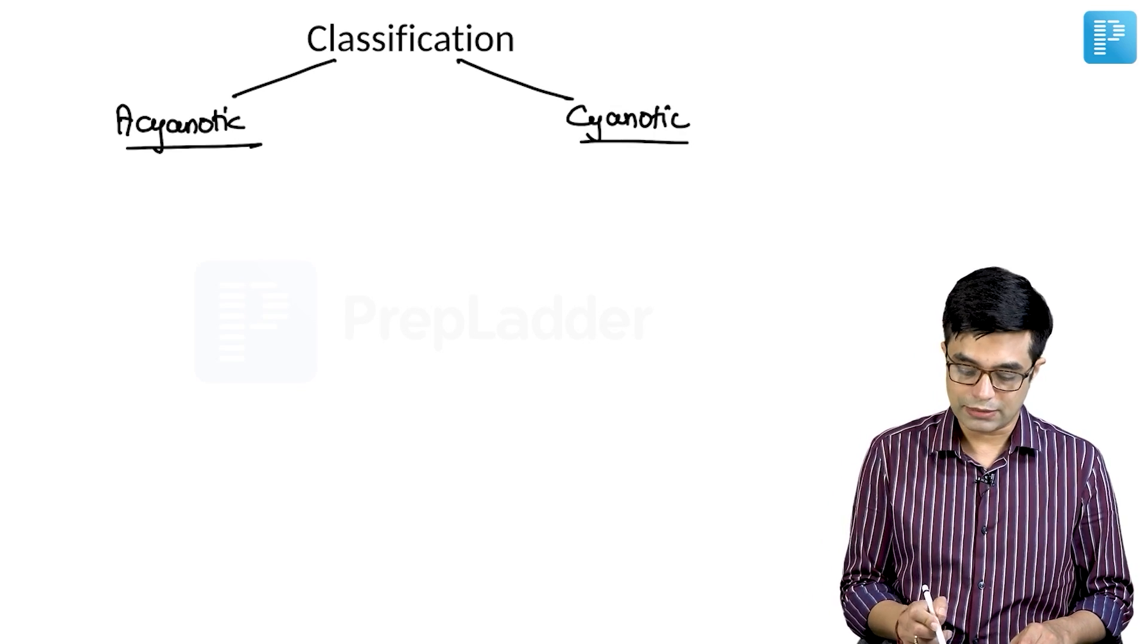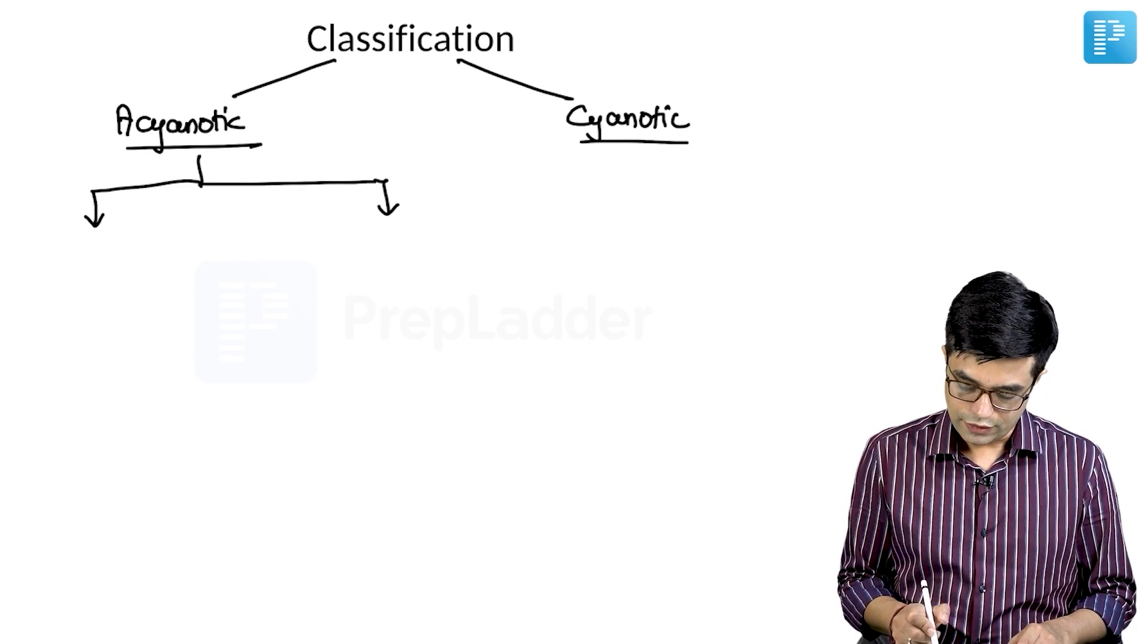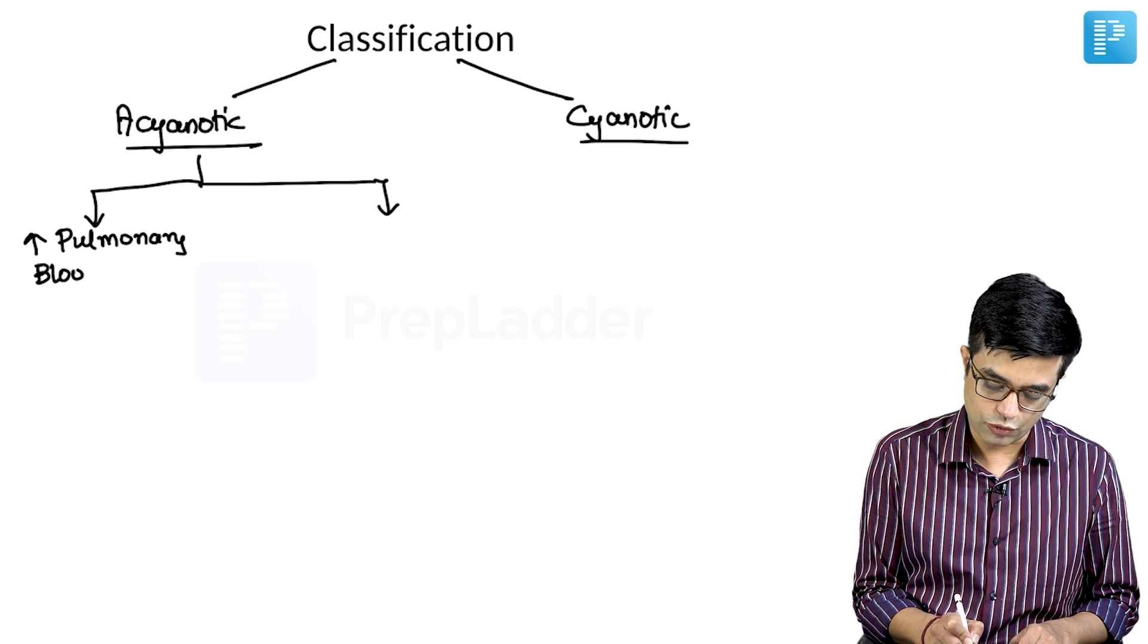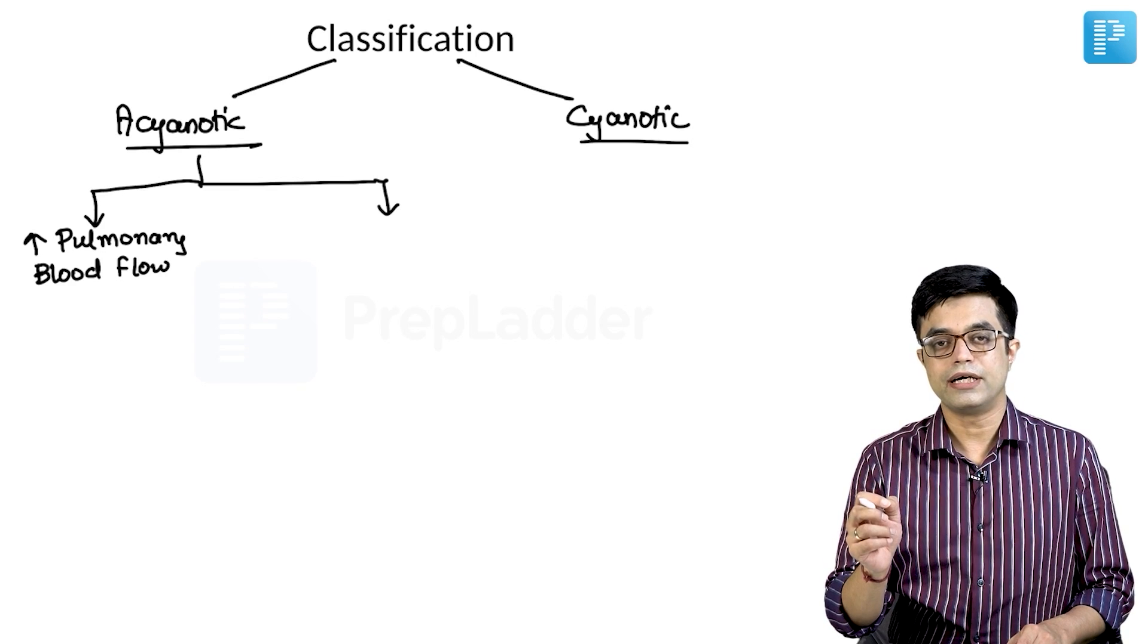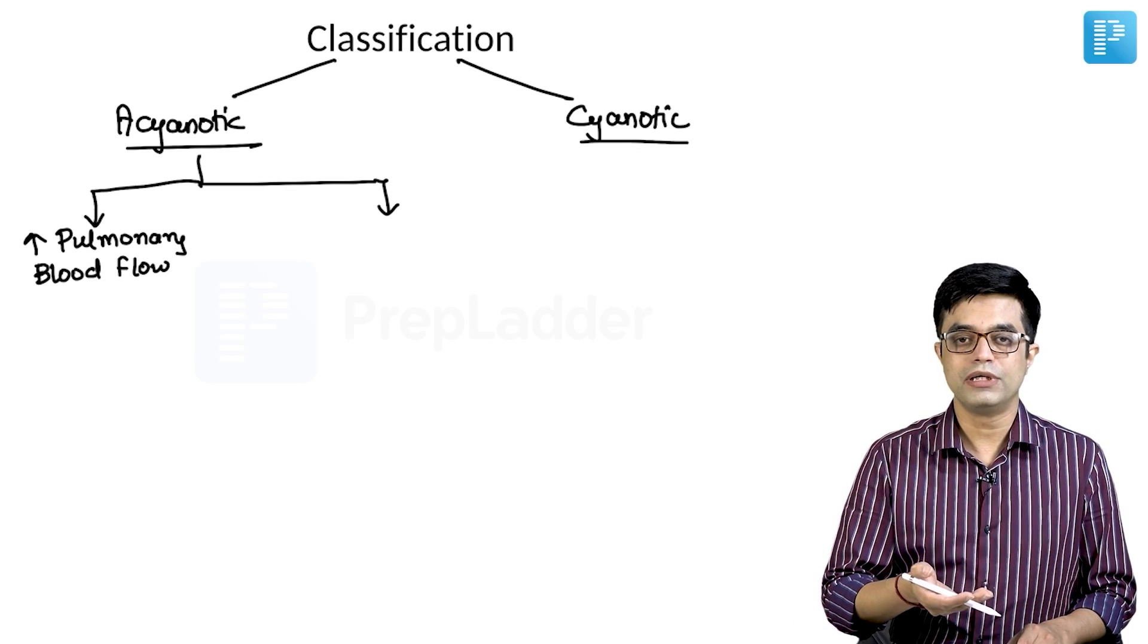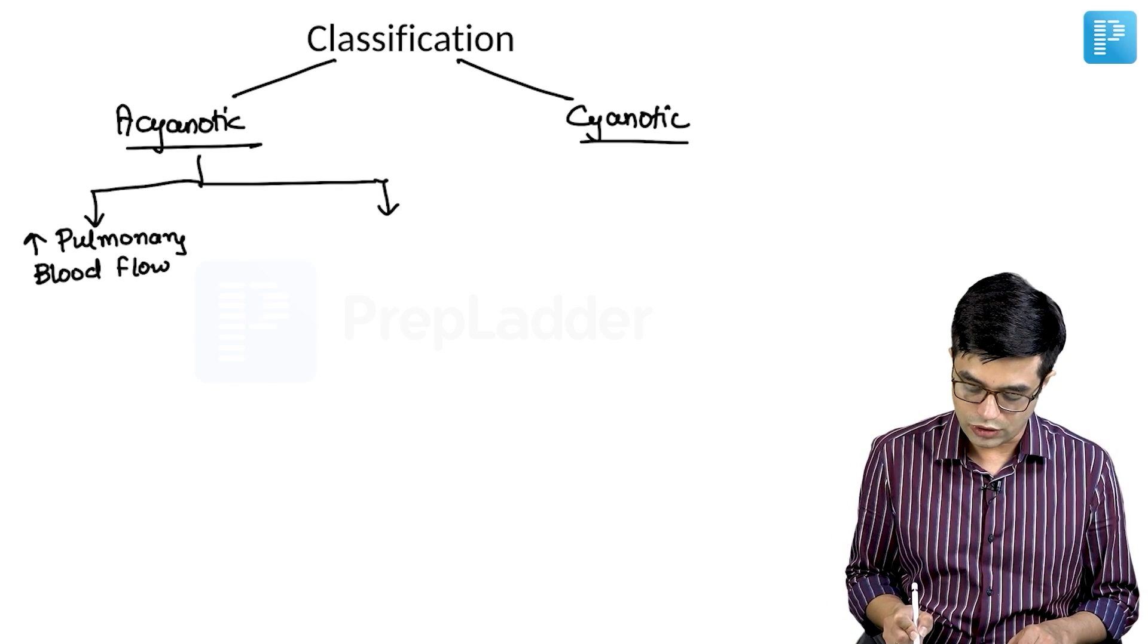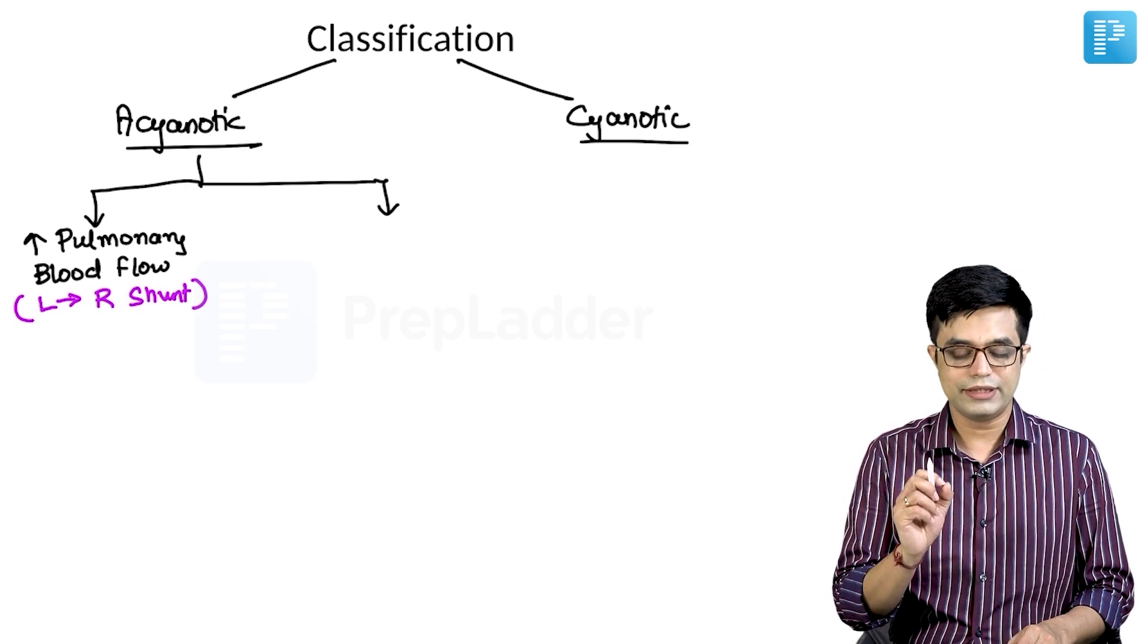Now, acyanotic heart diseases can further be subdivided into two parts based upon pulmonary blood flow. First, we have acyanotic heart diseases with increased pulmonary blood flow. What does increased pulmonary blood flow mean? It means that the amount of blood going from right ventricle into pulmonary artery towards the lungs is more than normal. Obviously, it will be more than normal when right sided circulation is receiving more blood than left sided. In other words, increased pulmonary blood flow are those conditions also called as left to right shunt lesions.